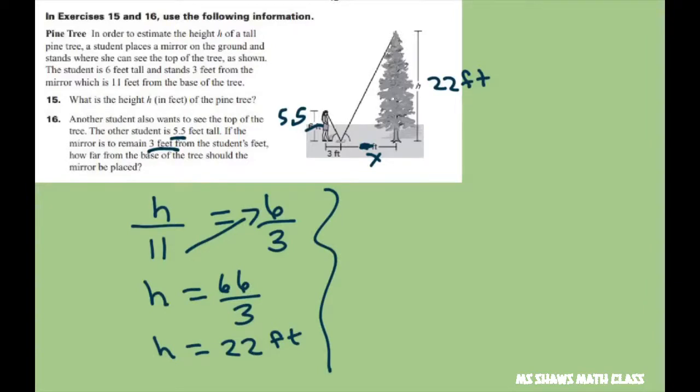This time I always like to have my x in the numerator. So I'm going to say x is to 22 as the x goes with the three feet. So 3 is to 5.5.